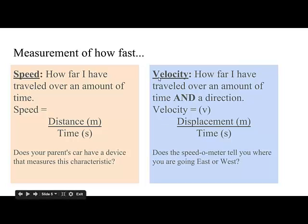On the other side, velocity is how far I have traveled over an amount of time and includes a direction. Now velocity is usually represented with a lowercase v. I've seen that script dv as well. And velocity is different because it is a displacement, a distance with a direction, divided by time. Now pay attention to your parent's speed-o-meter and does it ever tell you that you're going east or west? I don't think so. Your GPS might do that and that is no longer a speed-o-meter. It is a veloc-o-meter. It's a velocity-meter.